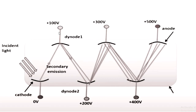The electrons are directed to dynode 1. This is the inside. On the other side, the photoelectron undergoes secondary emission — the primary leads to secondary emission, then the electron is emitted.